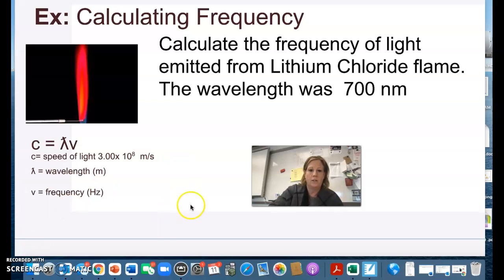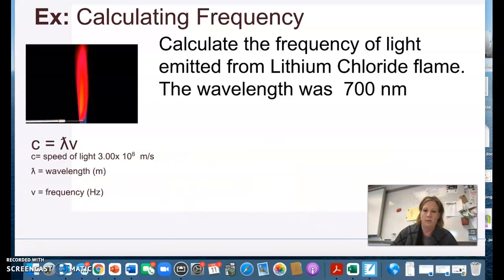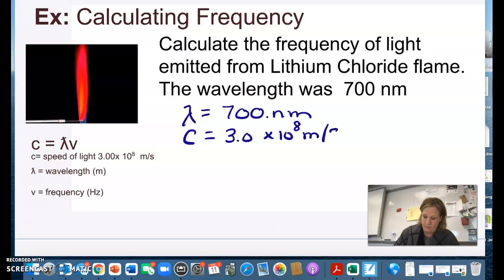So first question example I'm going to do with you is we're going to calculate the frequency of the bright red light that we get from doing a flame test with lithium. The wavelength of that red wave is 700 nanometers and this is part of the electromagnetic spectrum so it's going to travel at the speed of light. So in this question we're solving for frequency which we do use the Greek letter nu to represent and our equation is the speed of light equals wavelength times frequency.